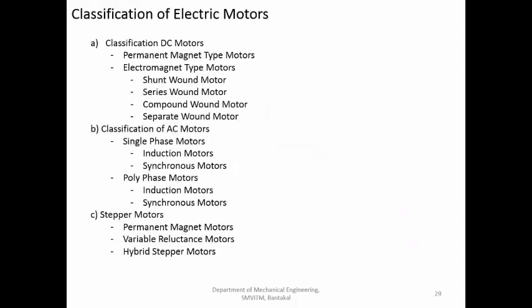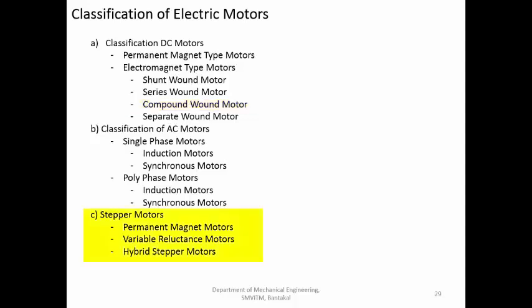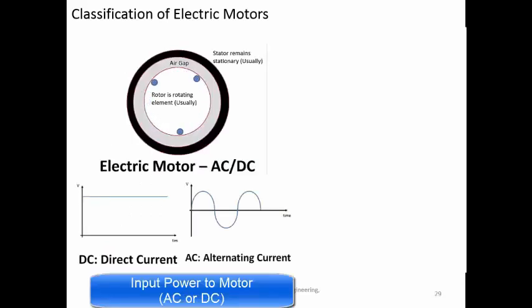This is a broad classification of electric motors. Basically there are two types: DC motor and AC motor. In the DC motor, you can have two constructions — permanent magnet type and field windings type, which is the electromagnet type. In the electromagnetic type, there are four main categories: shunt wound, series wound, compound wound, and separate wound. Then you also have stepper motors, which include permanent magnet stepper motors, variable reluctance stepper motors, and hybrid stepper motors.